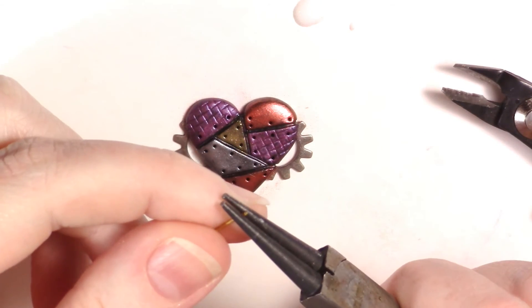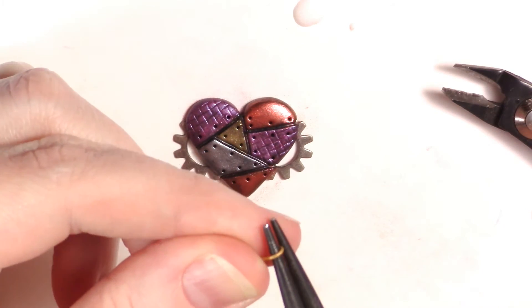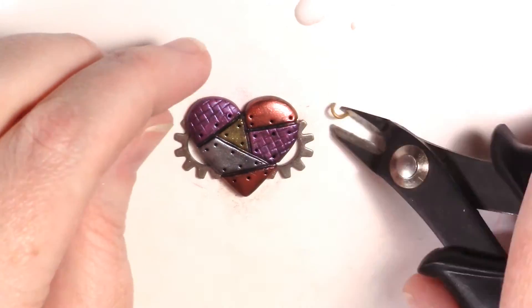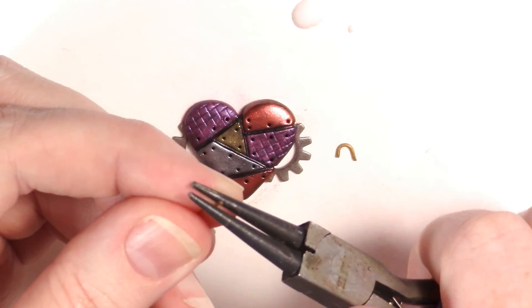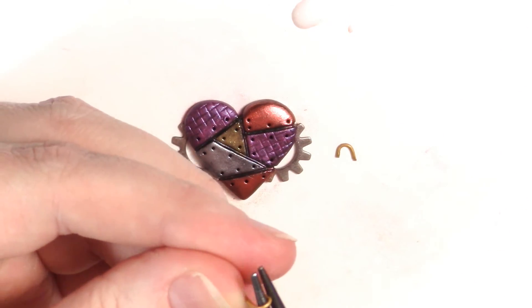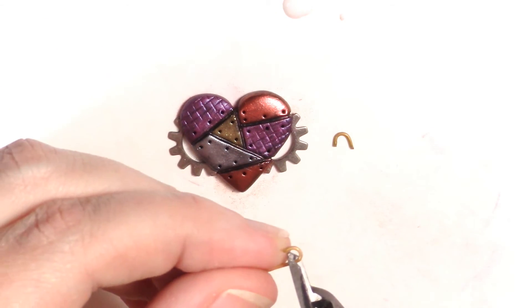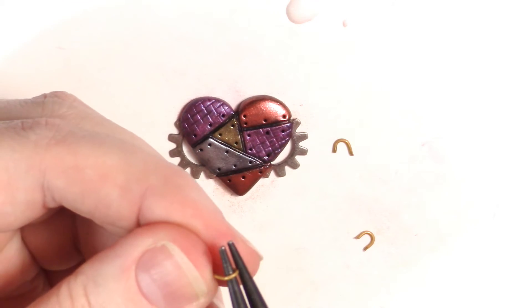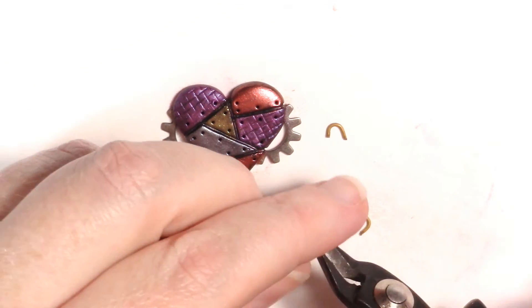Now, take your eye pin and round nose pliers and start making some rounded staples. Place the tip of your eye pin into the pliers and bend the eye pin around it. Once you have a horseshoe shape, cut it off. Make at least three. Just keep repeating these steps for each one.